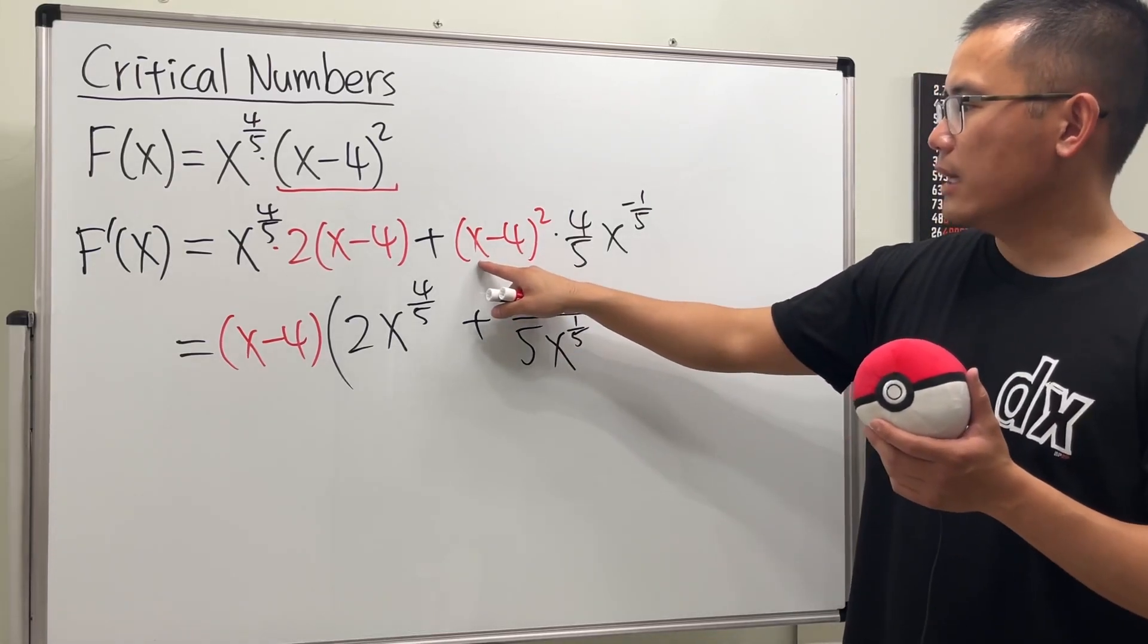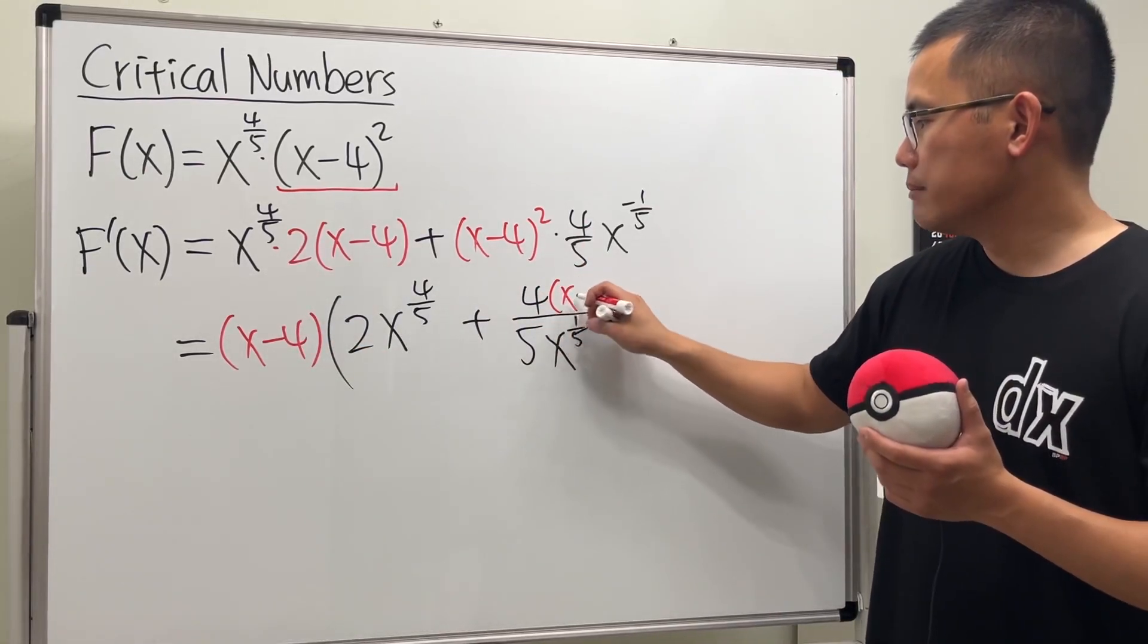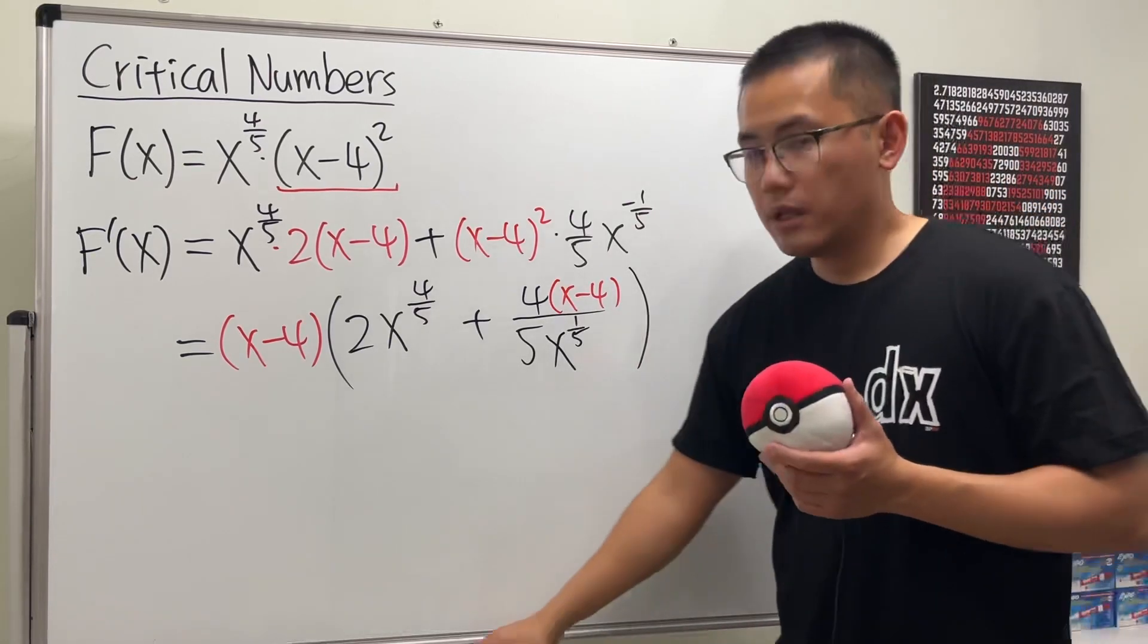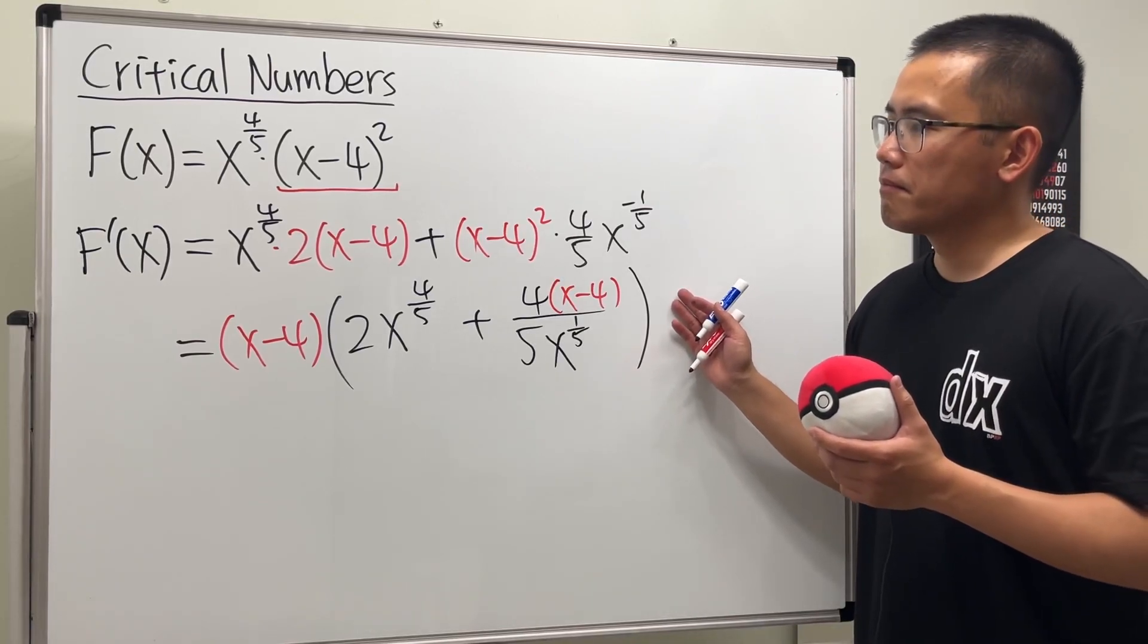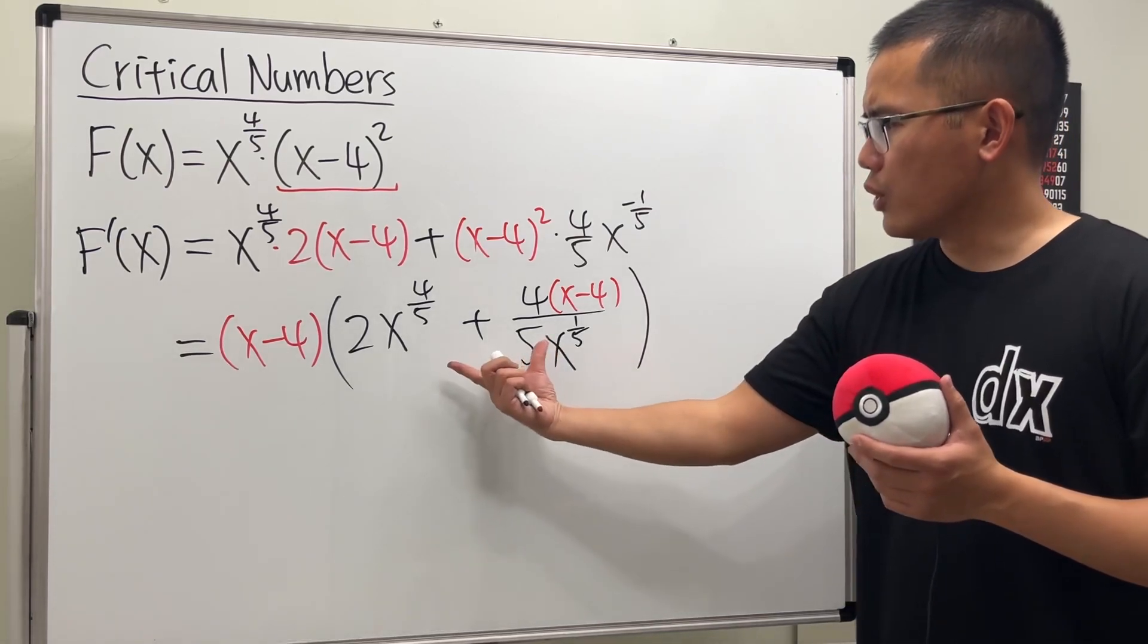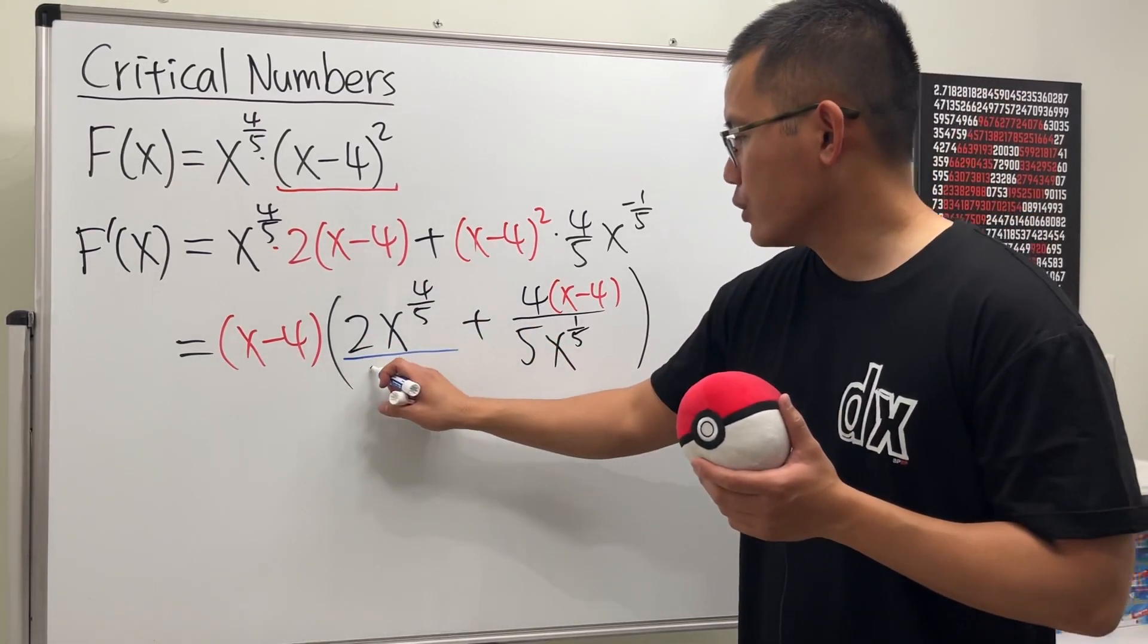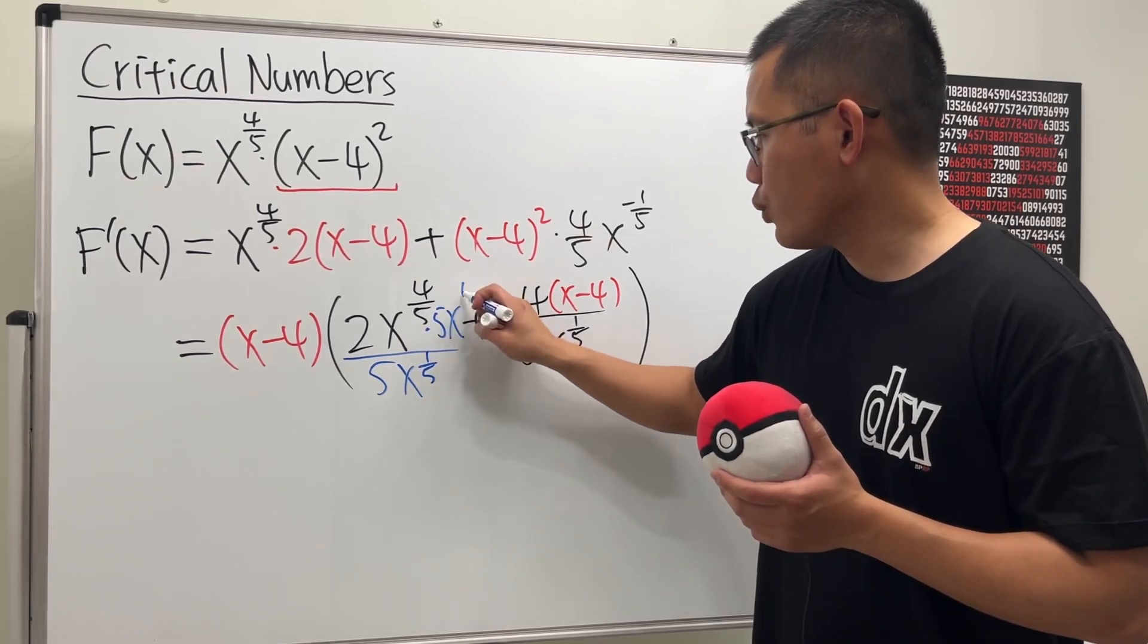Here we have (x - 4)^2, but we took one out, so right here we will have (x - 4) left, to the first power. This is what we have. We have to find the derivative where the derivative equals zero, so we shall work this out a little bit. Let me just multiply this one by the denominator, which is 5x^(1/5).